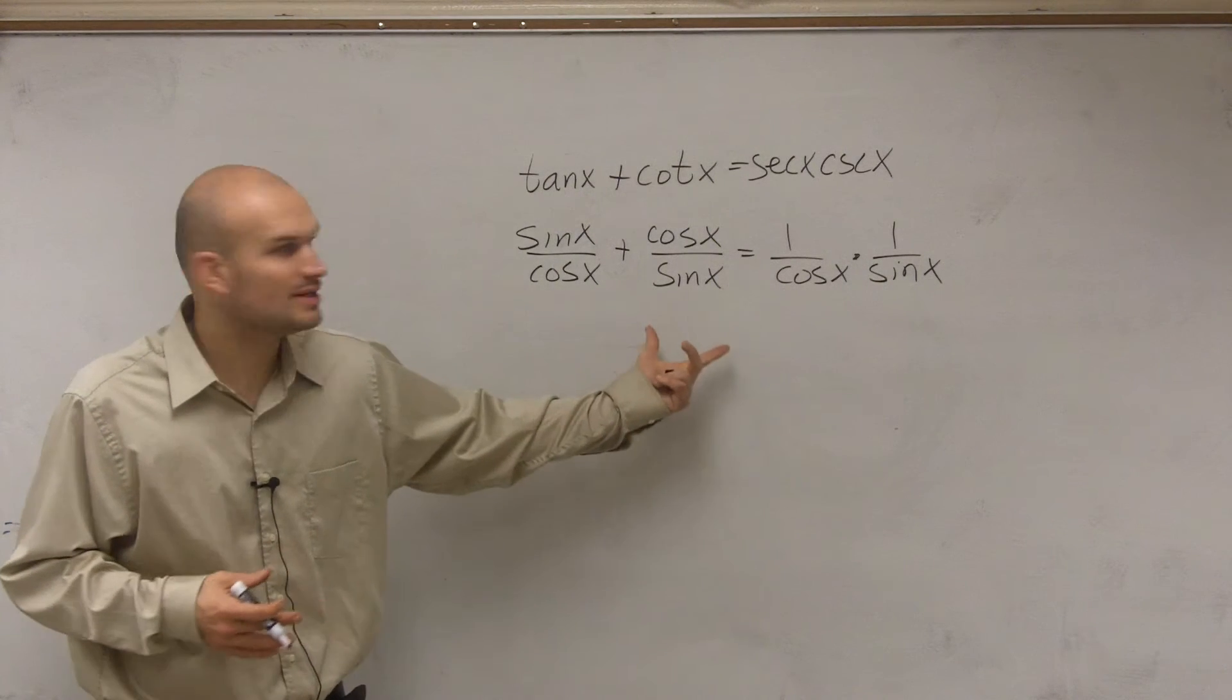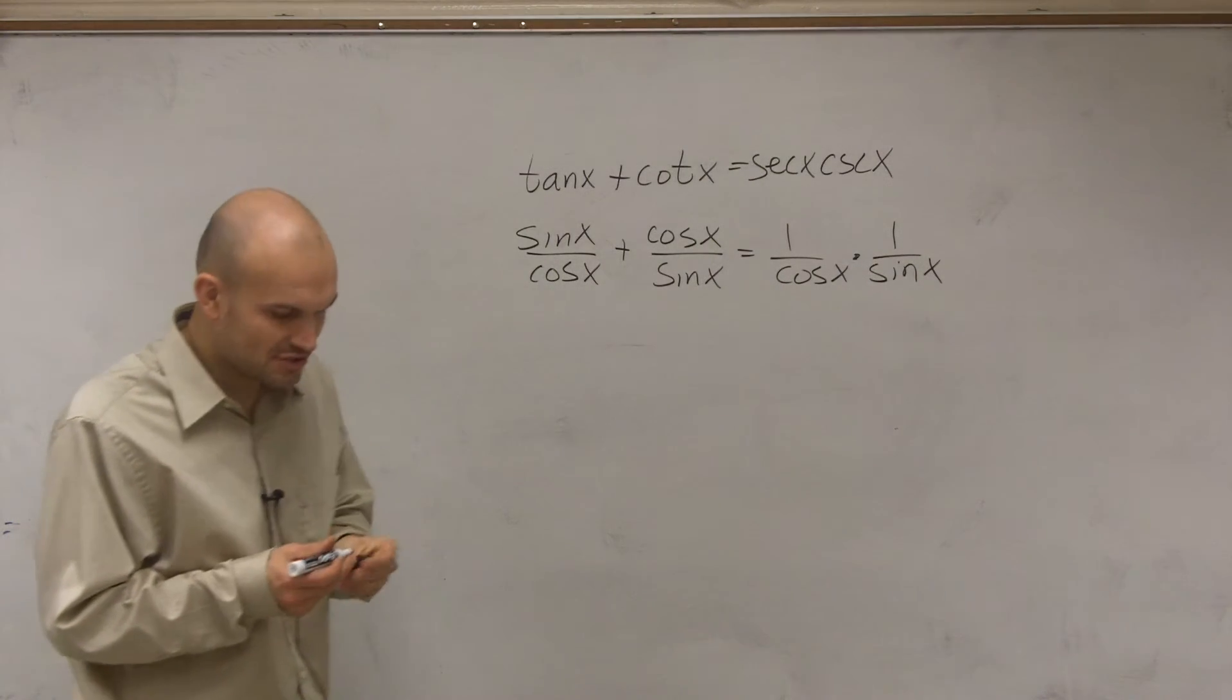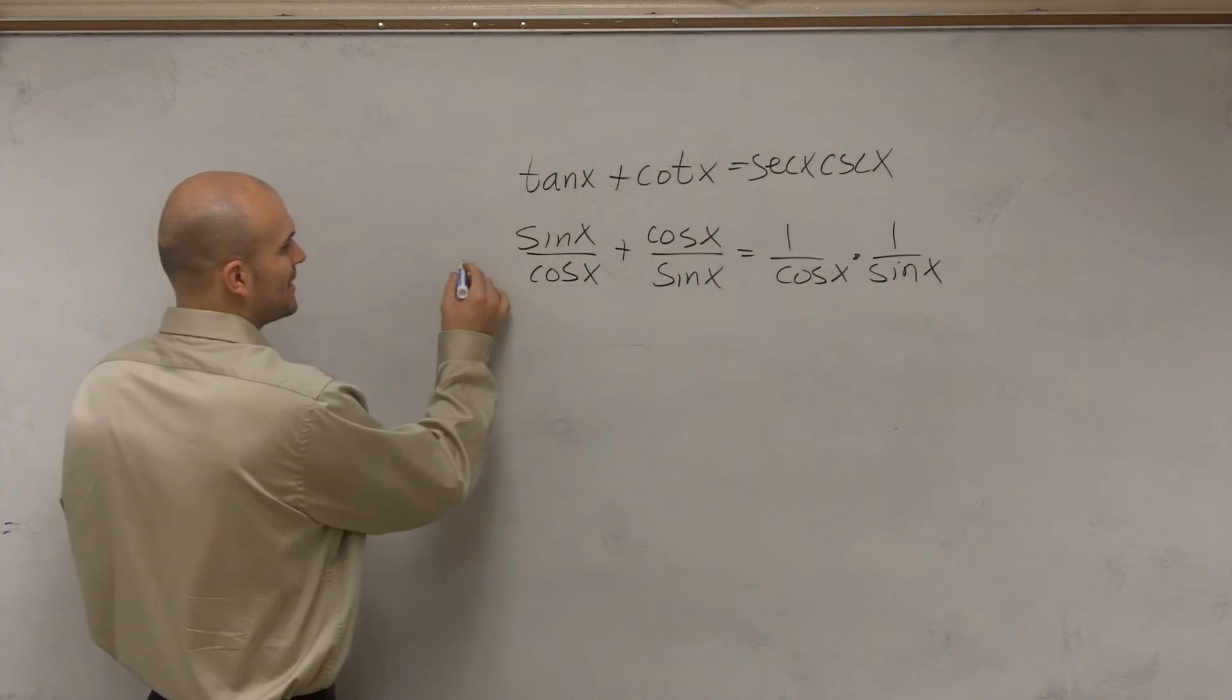Then what you can do is you could say, oh, well, what this is is this is really actually fractions with unlike denominators. So let's add these two up. Let's add these together by getting the same denominator.